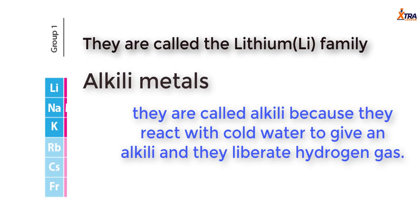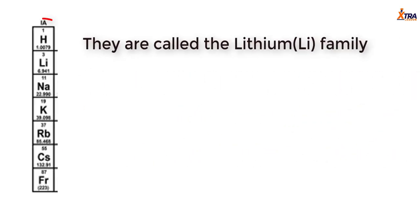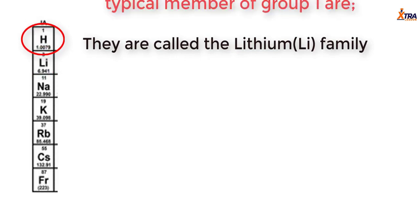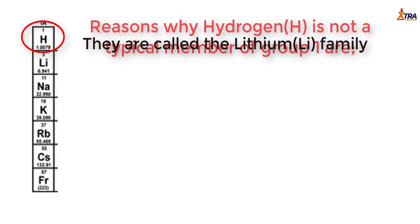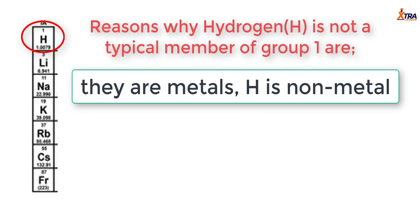Group 1 is also called the lithium family. Now, if you look at the periodic table, the first member you see in group 1 is hydrogen, but we don't call the group the hydrogen family. The reason is that hydrogen is not a typical member of group 1 — the first typical member is lithium. Hydrogen doesn't follow most group 1 properties: group 1 elements are metals, but hydrogen is not a metal; it is a non-metal.